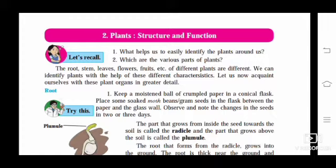What helps us to easily identify the plants around us? Which are the various parts of the plants? Things like root, stem, leaves, flowers, and fruits help us decide that a particular thing is a plant.